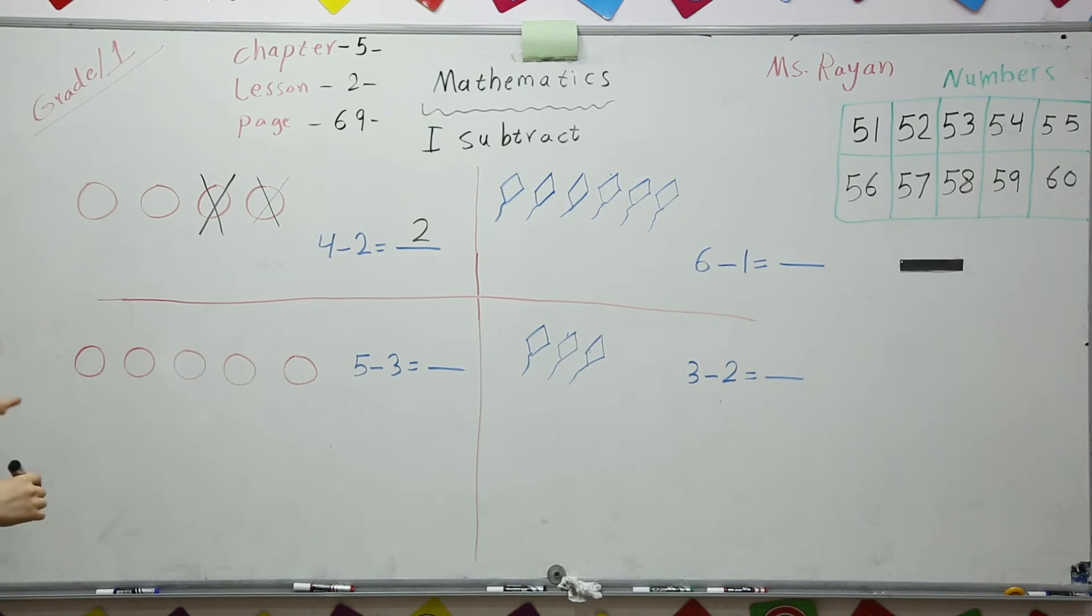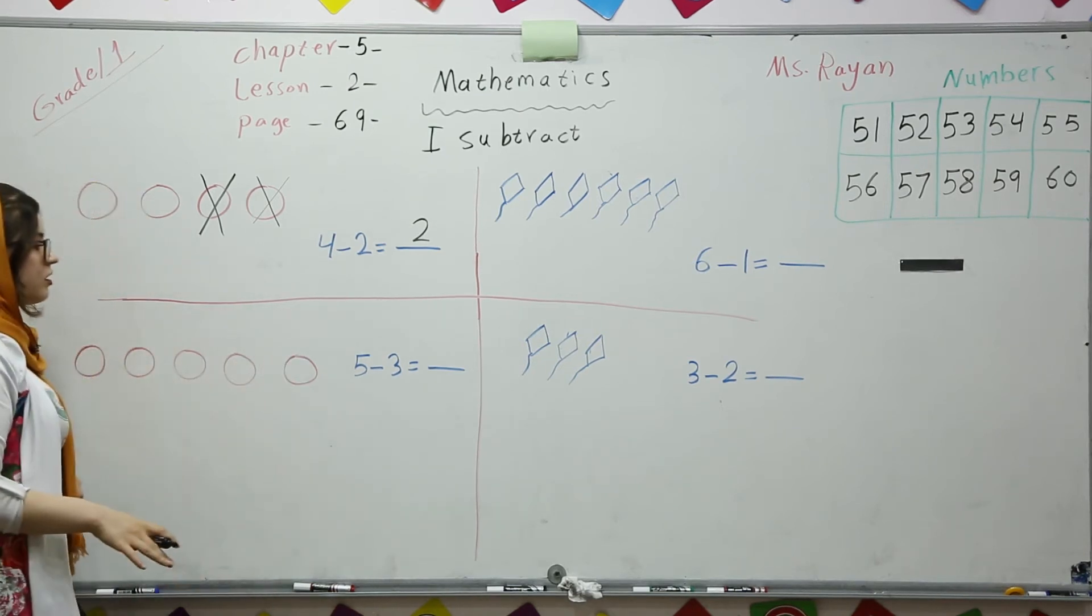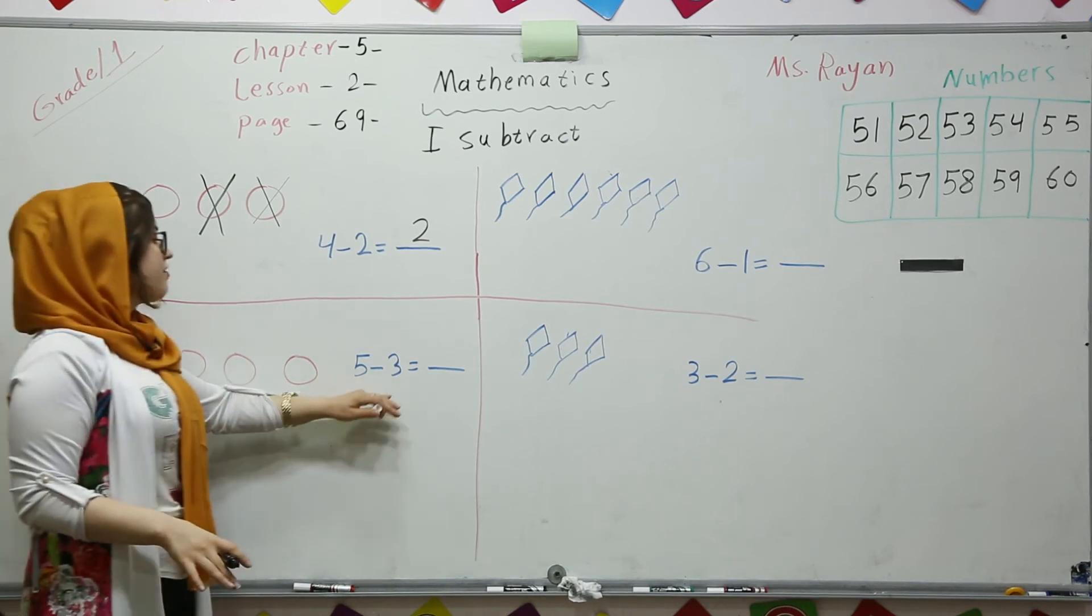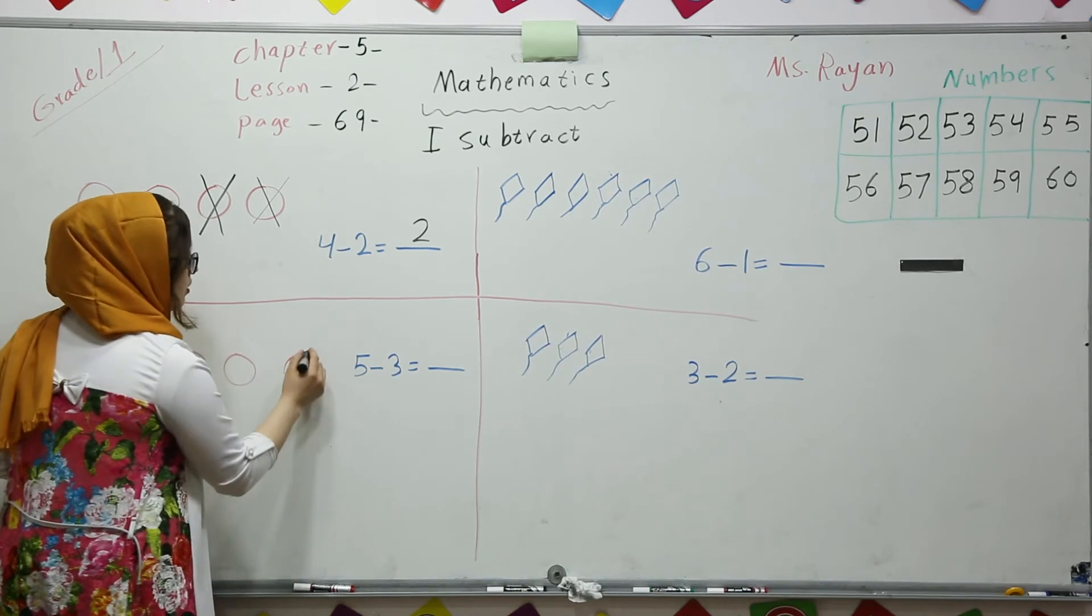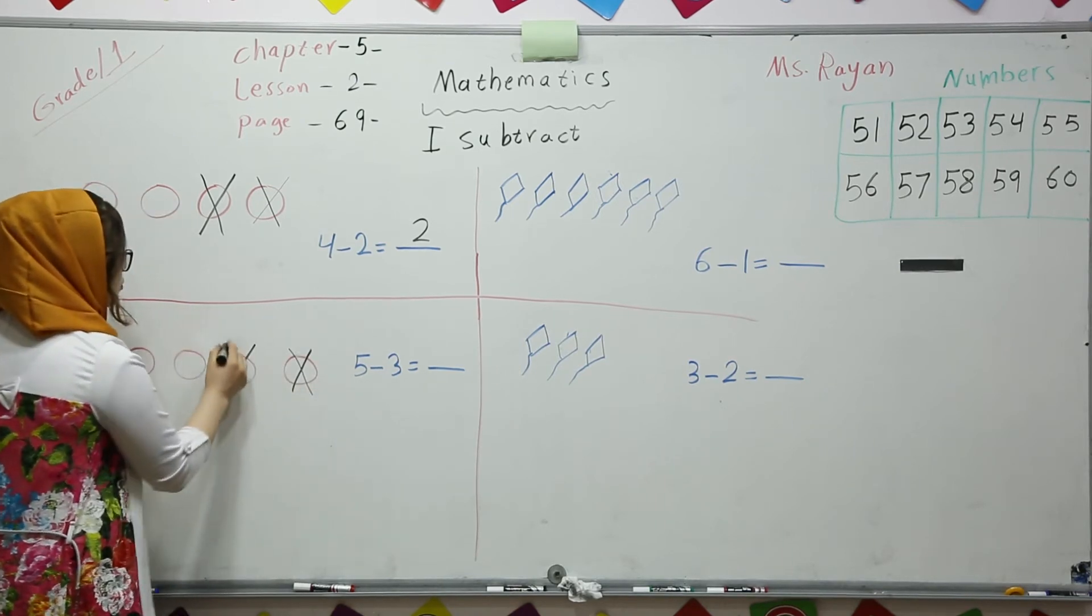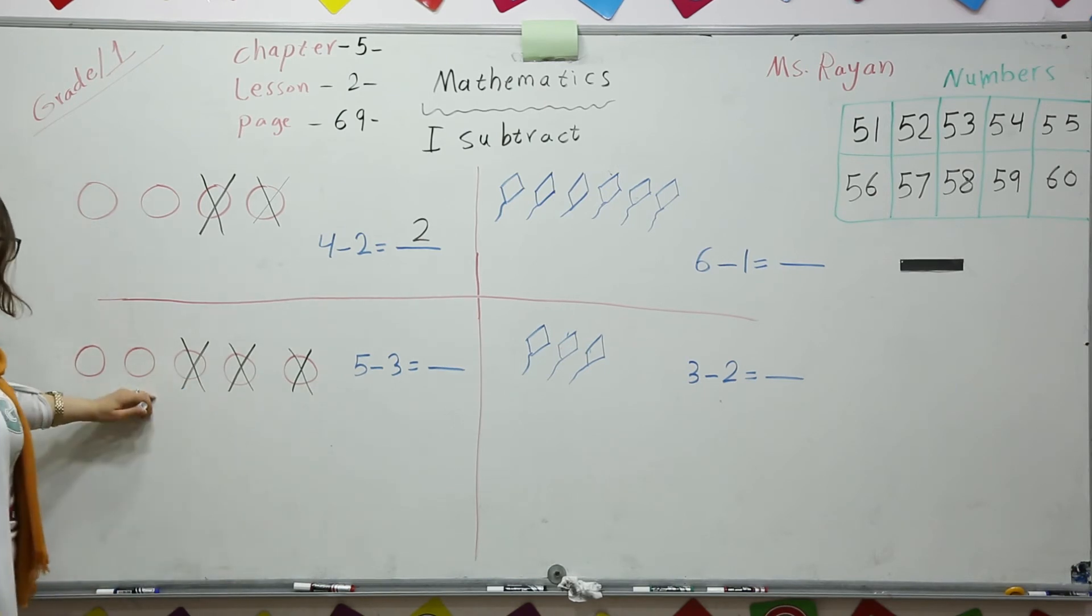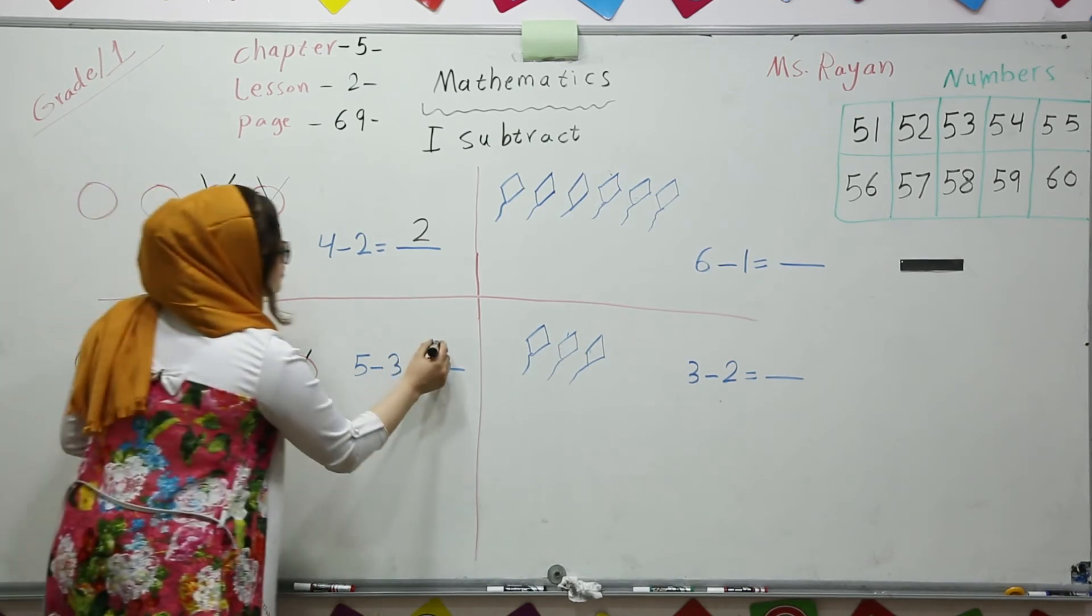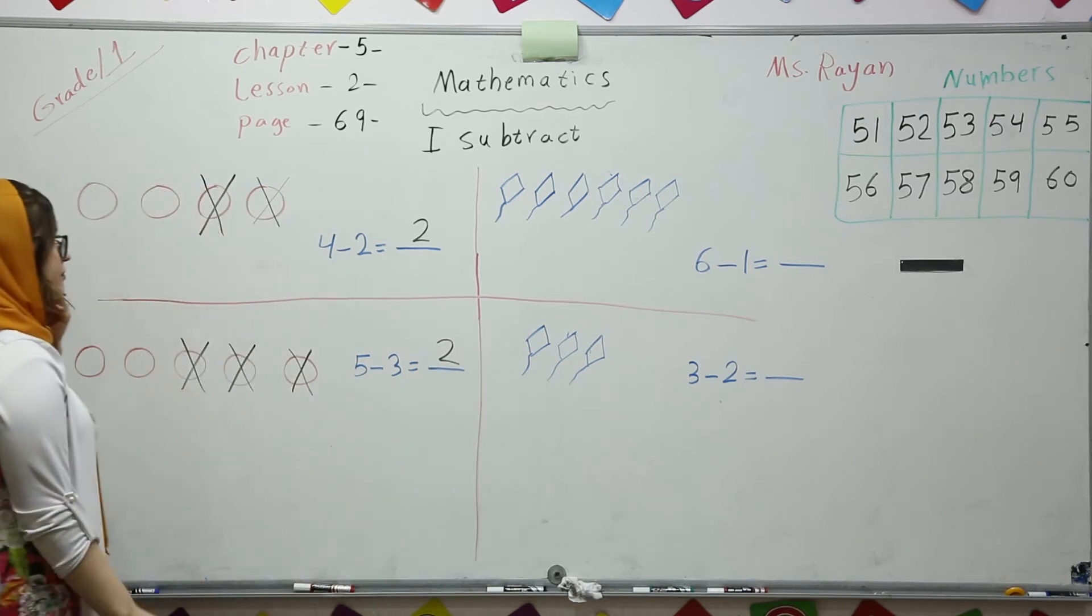Another one, we have got, let's say, 1, 2, 3, 4, 5. 5 balls, okay? It says that 5 minus 3, okay? So, cross out 3. 1, 2, 3. So, how many are left? 1, 2. So, 5 minus 3 equals 2, okay?